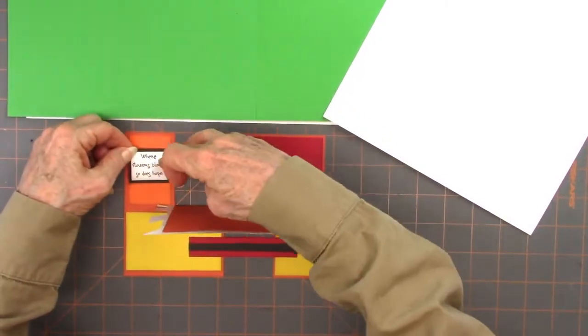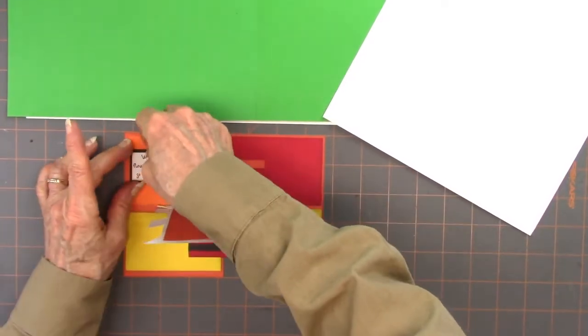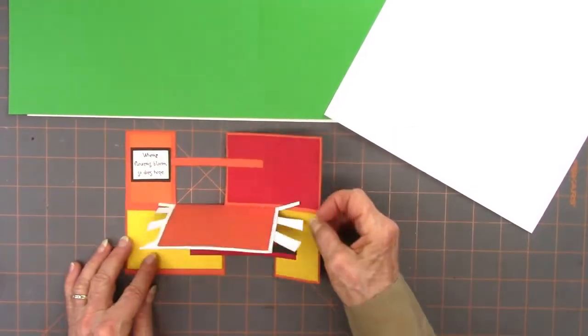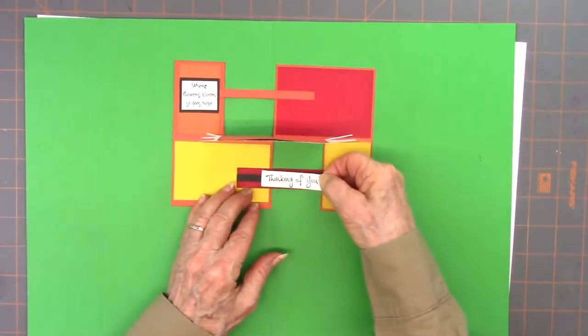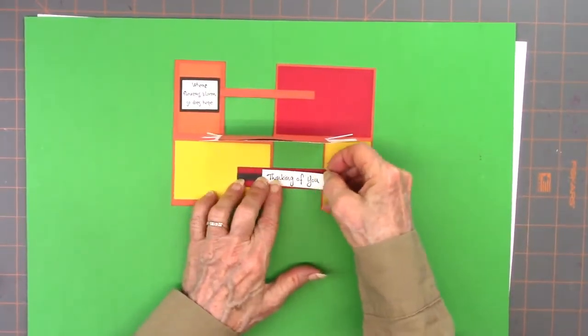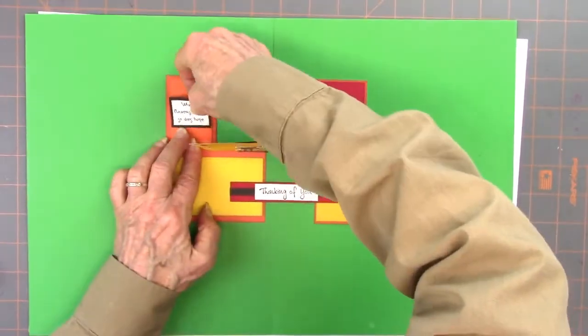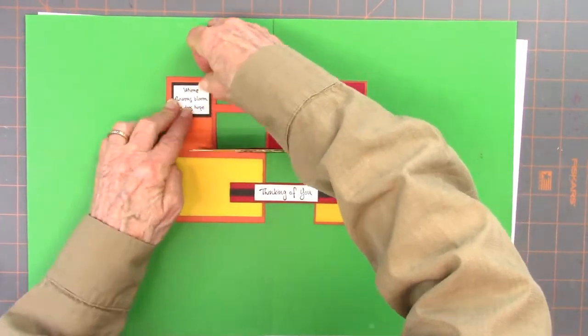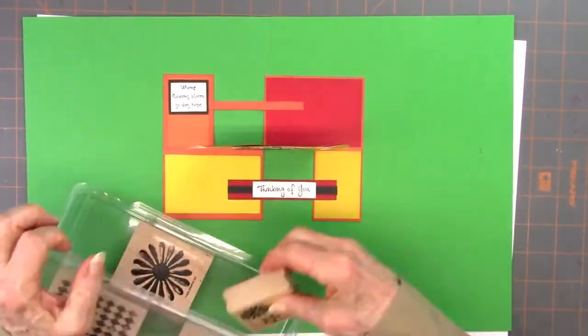measuring on something like this grid helps you to keep those lines straight. And then there is a little saying there that goes with this stamp set. It's where flowers grow, there's hope or something like that. Then I also put a little thinking of you stamp sentiment on that other opening, but you'll see later. I decided to not do that. But anyway,